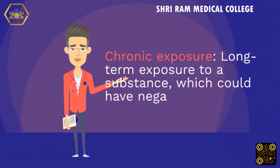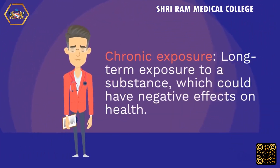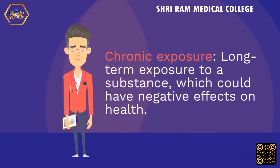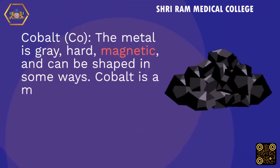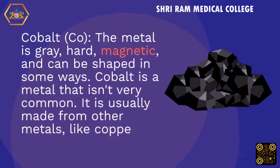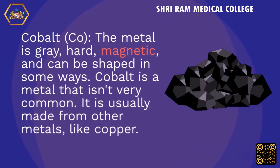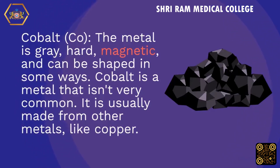Chronic exposure: long-term exposure to a substance, which could have negative effects on health. Cobalt (Co): the metal is grey, hard, magnetic, and can be shaped in some ways. Cobalt is a metal that isn't very common and is usually made from other metals, like copper.